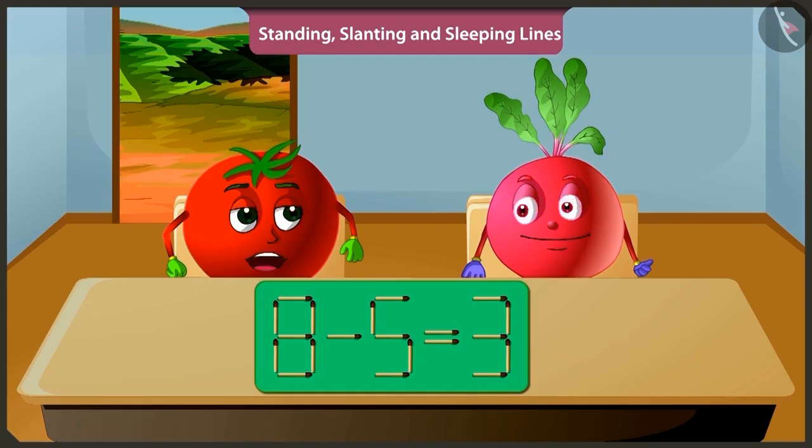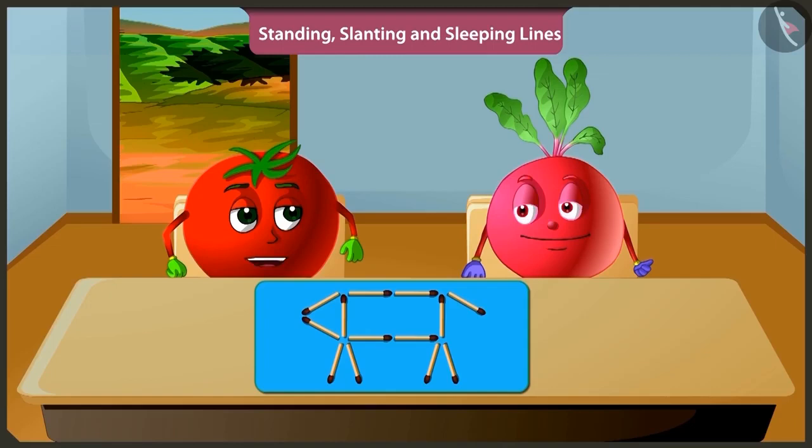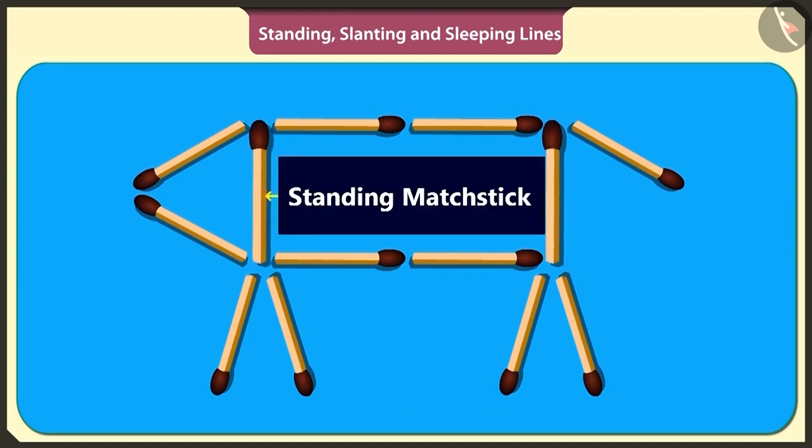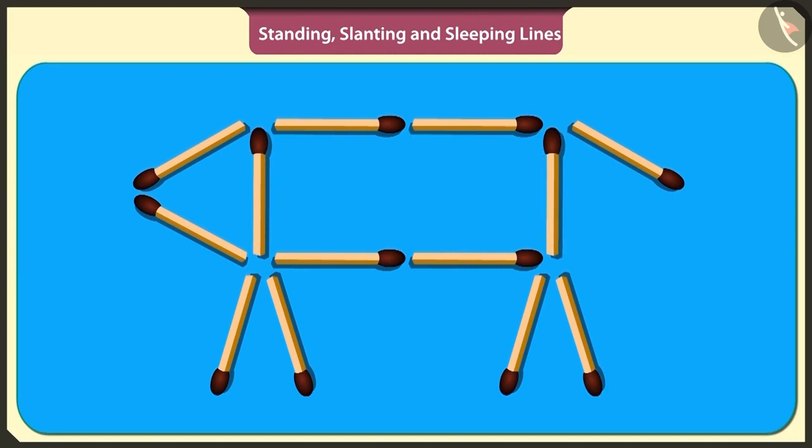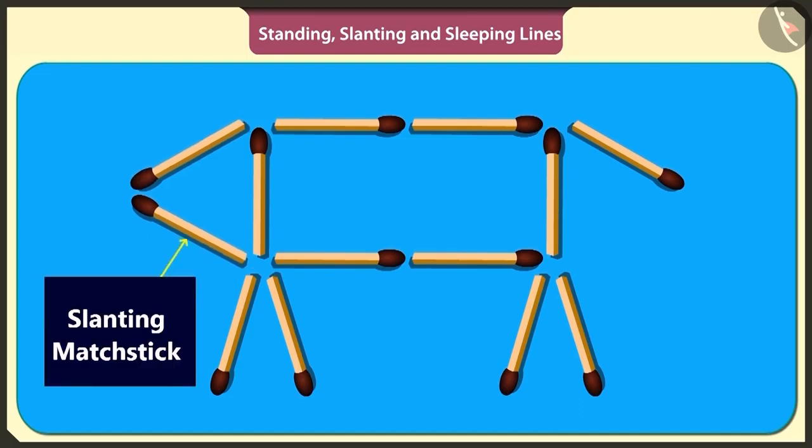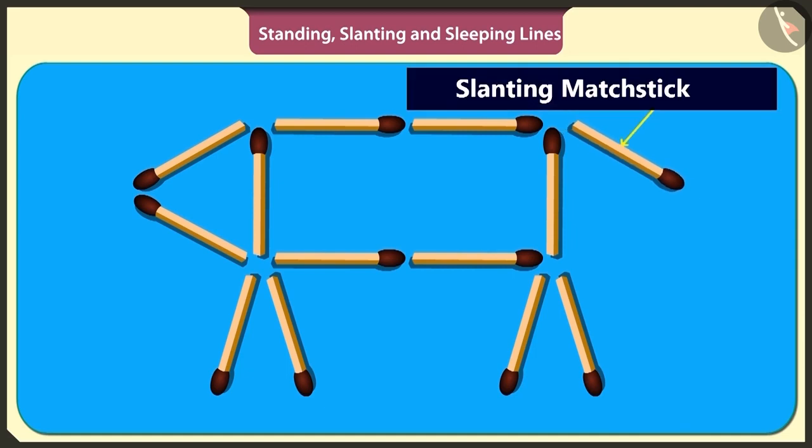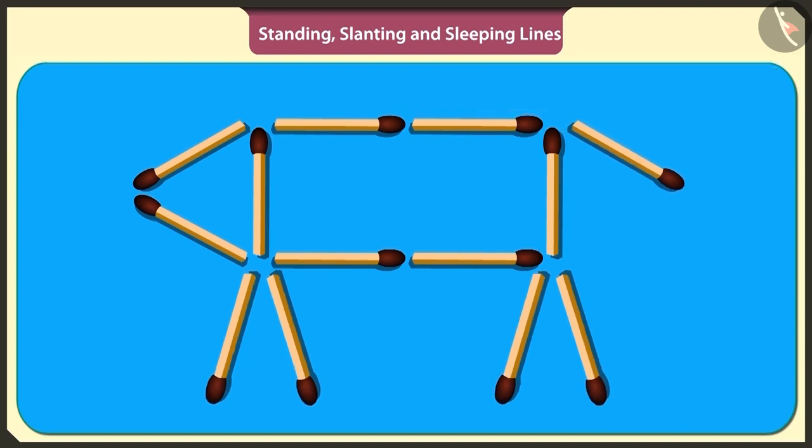Let's play another game. I have made the dog using matchsticks. We made the dog's tummy using four sleeping sticks and two standing sticks. The dog's face is made using two slanting sticks. To make the dog's tail, one slanting stick has been used. Yes. And four standing sticks have made the four legs of the dog.